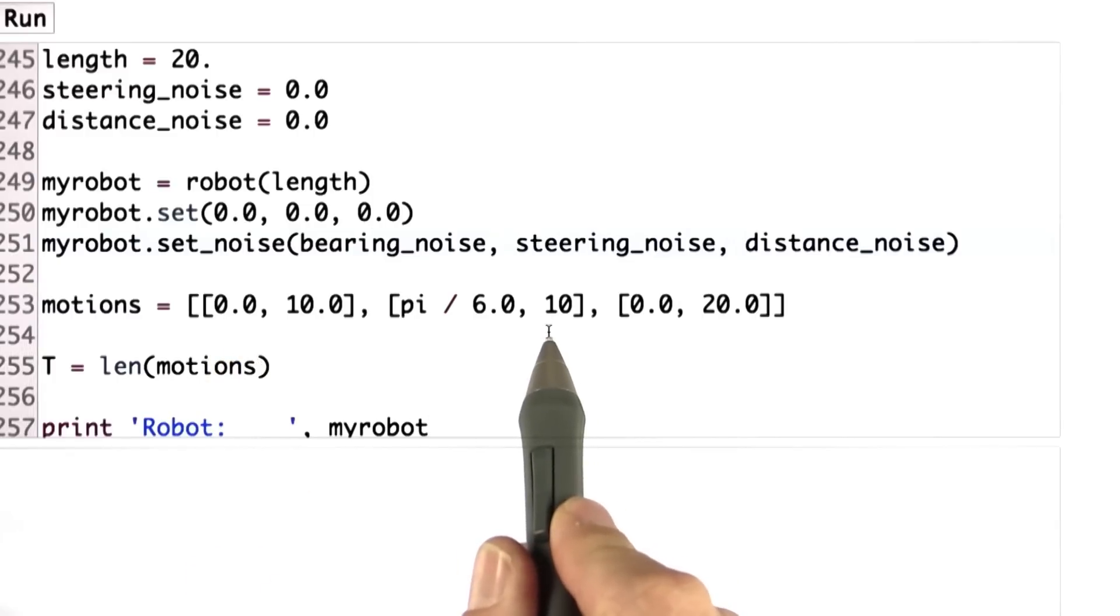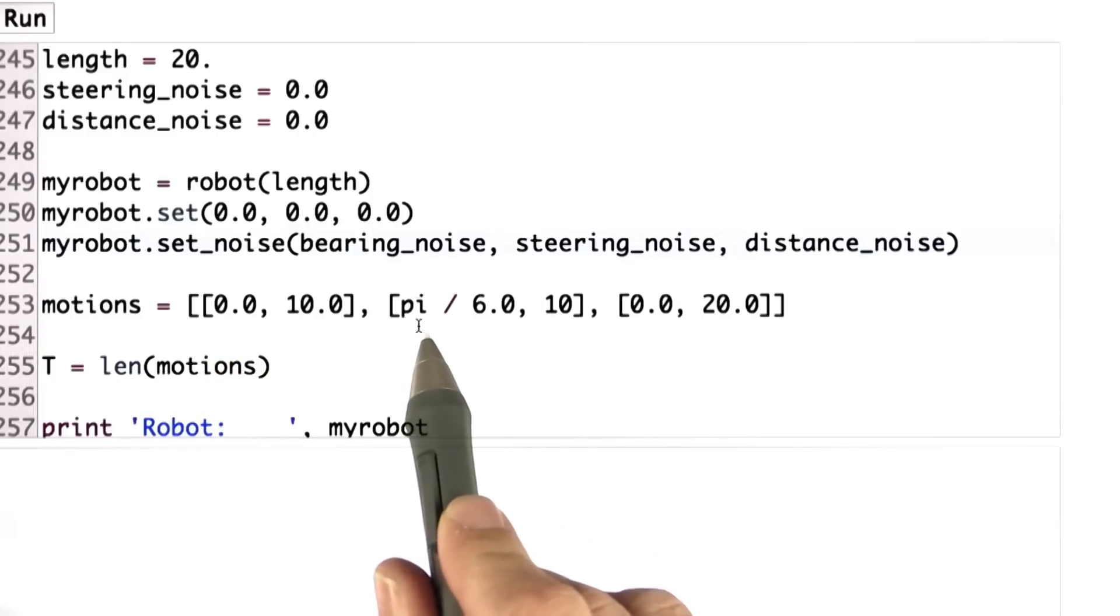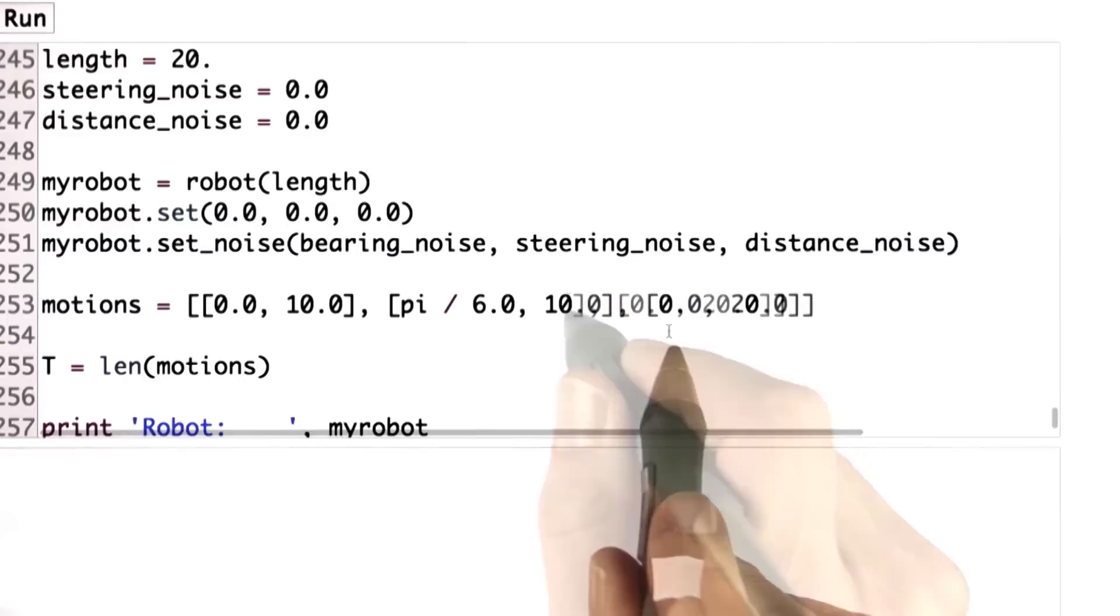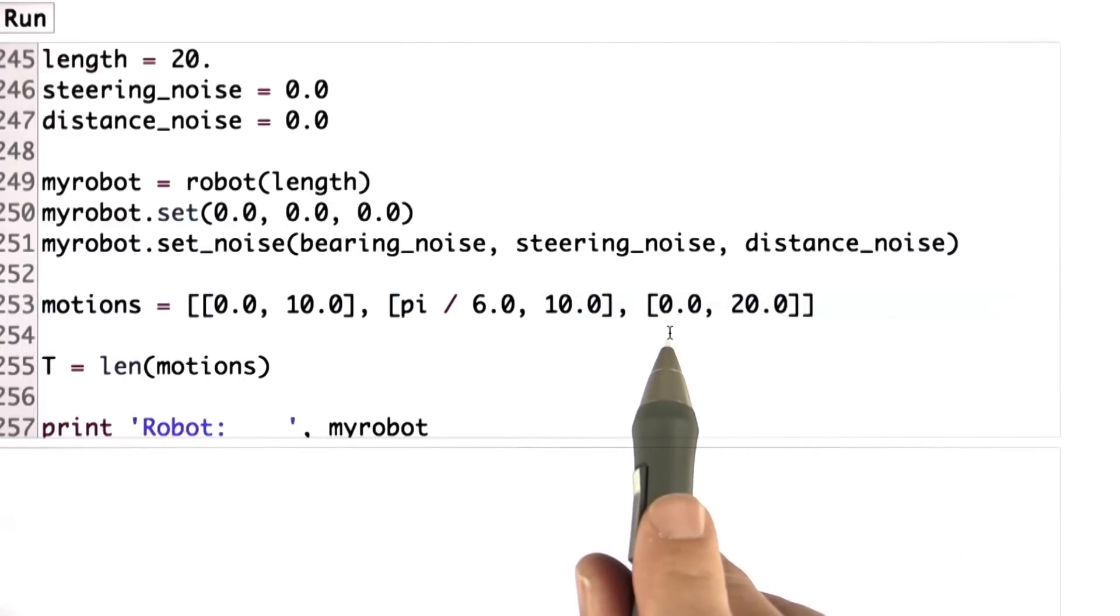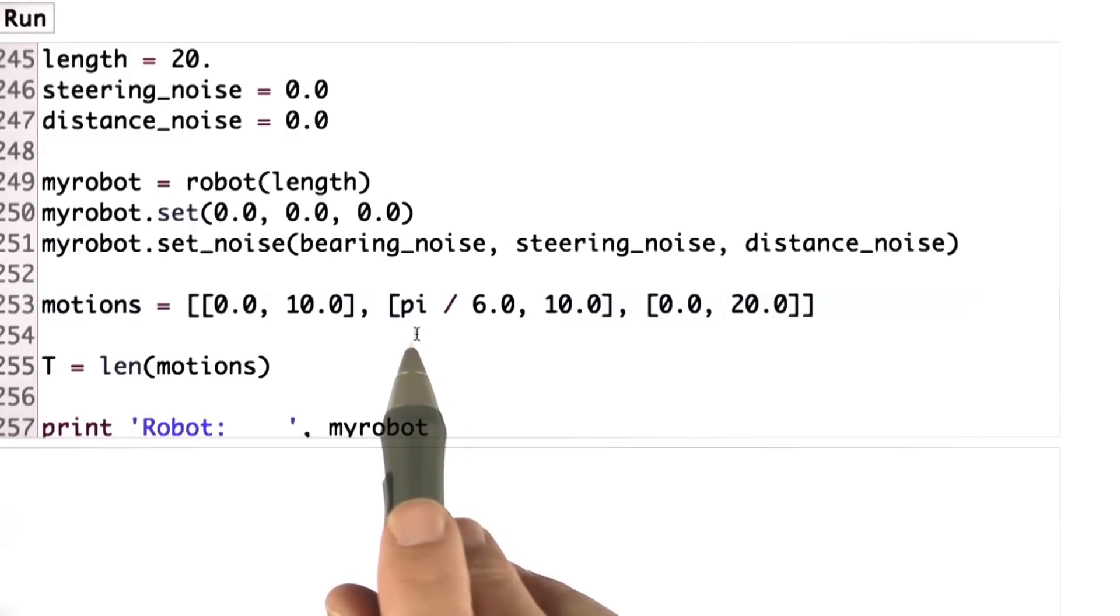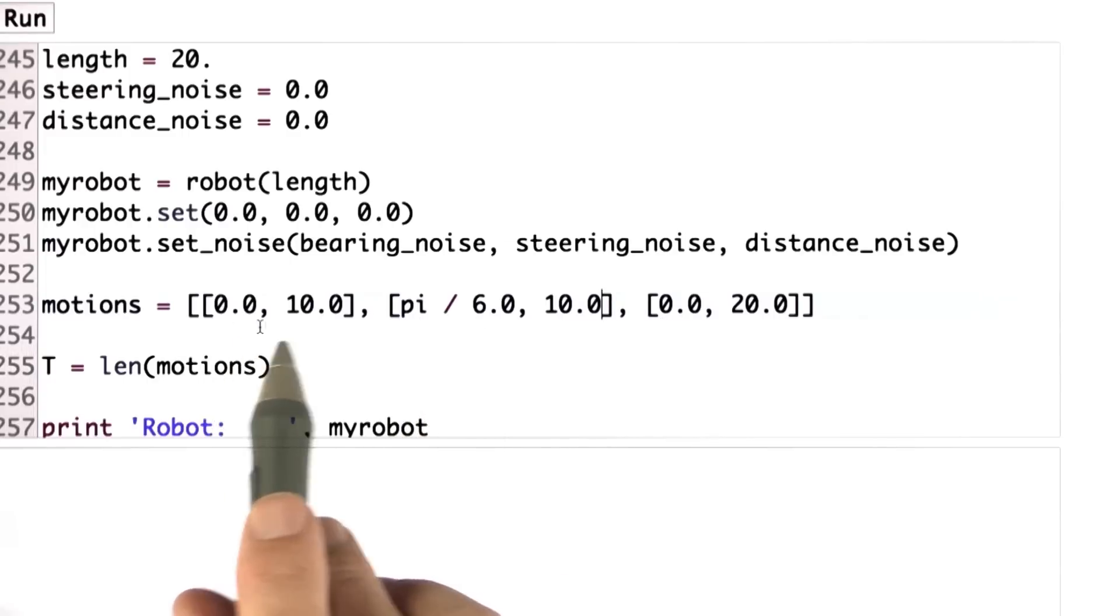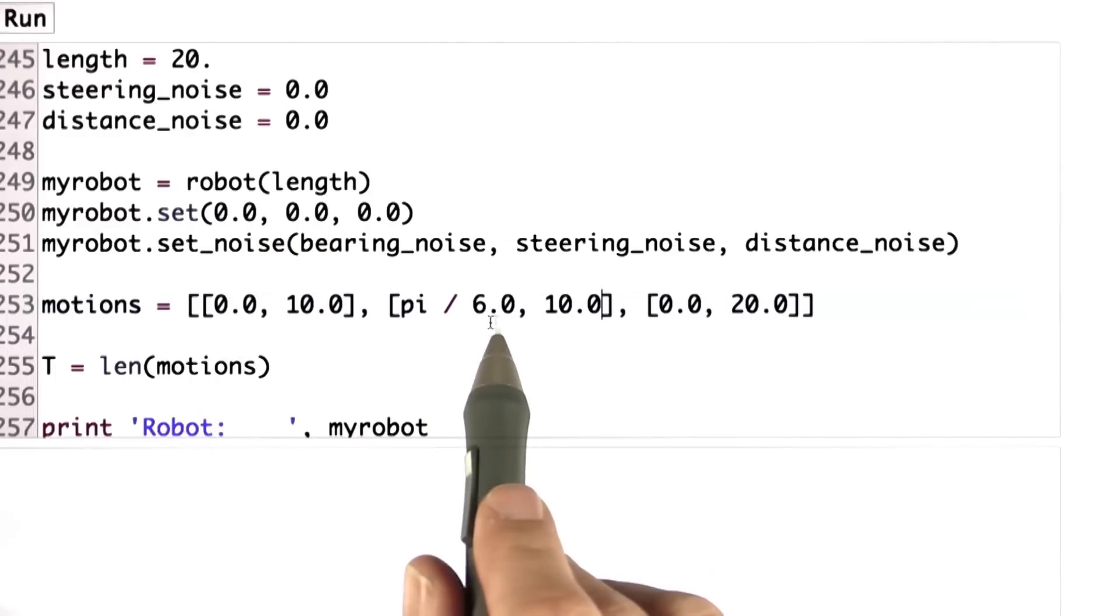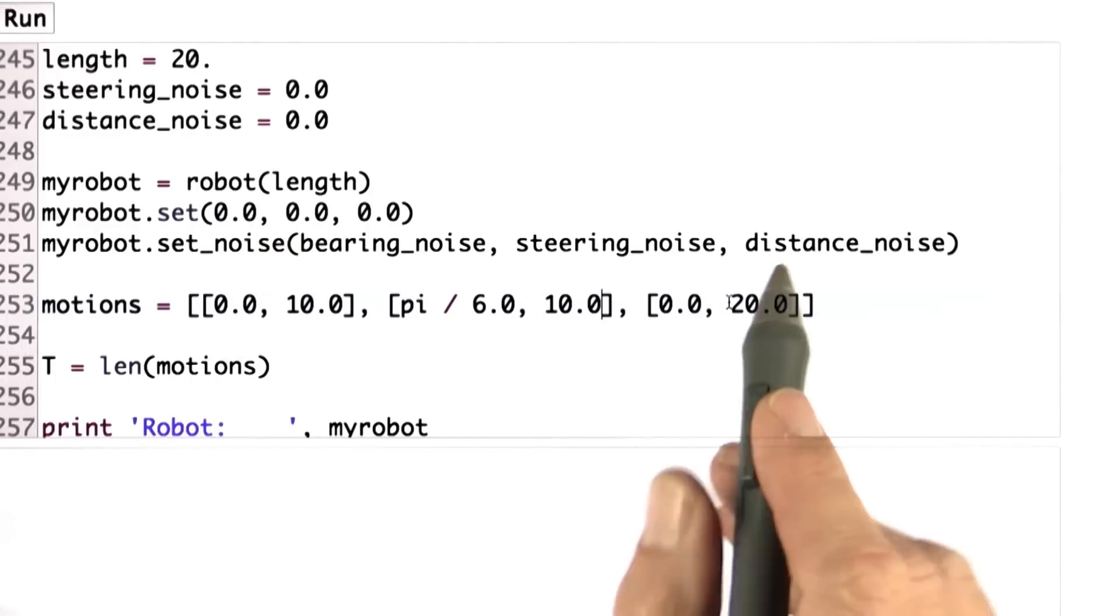Then it moves another 10 with a steering angle of pi divided by 6. And then it moves 20 again with a steering angle of 0. A pi over 6 is a left steering. So the robot should change its coordinates in the beginning just in the x direction because it's facing an x direction over here. Then turn left a little bit, go forward, and go straight again.